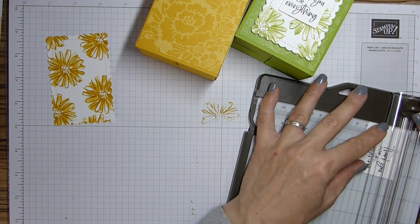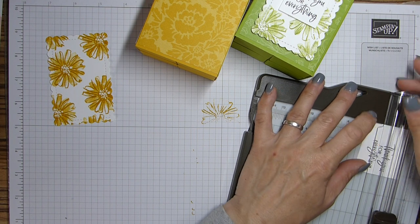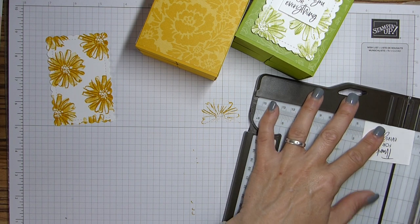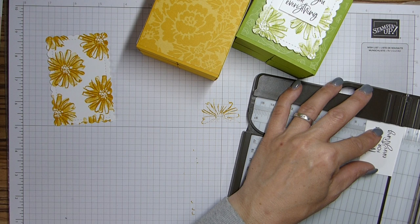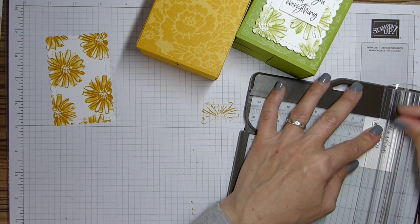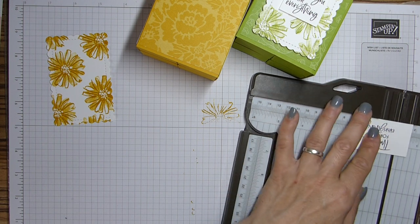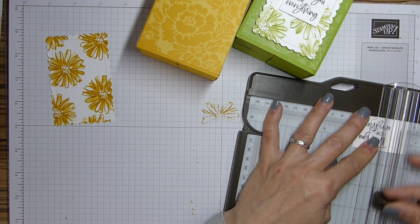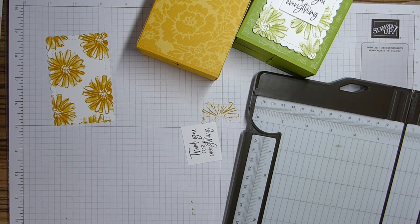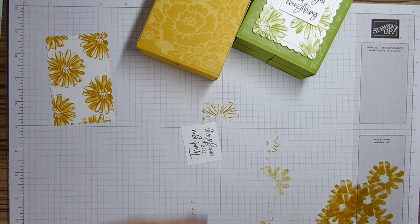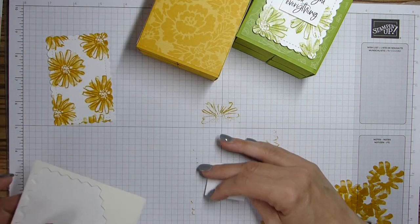So I'm just going to trim this. Sentiment down. No. That's not going to work, is it? Because that looks like it isn't level. There we go. That's better. So a couple of dimensionals on here.